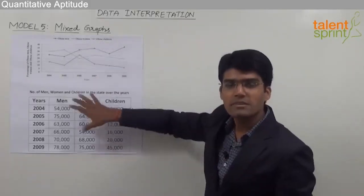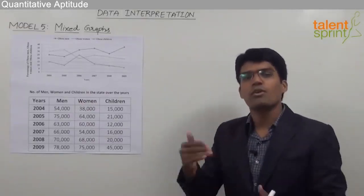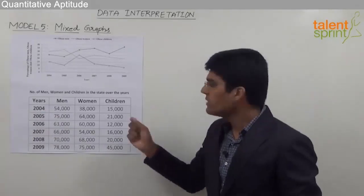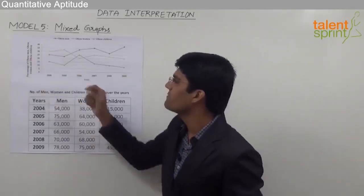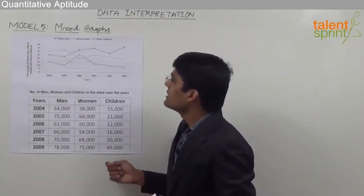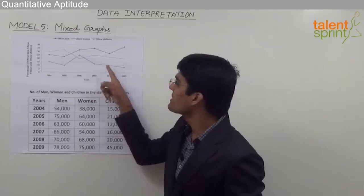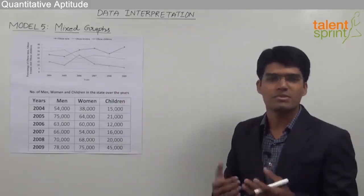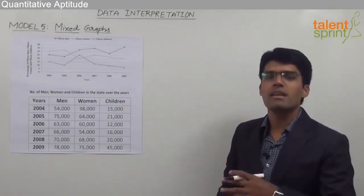By combining the percentages in the line graph and the totals in the tabular form, we can find out the number of obese men, women, and children for any given year. For example, in 2004, total men were 54,000 and the percentage of obese men was 25%, so we take 25% of 54,000. Similarly, for obese children in 2008, it's 10% of 20,000, which equals 2,000.